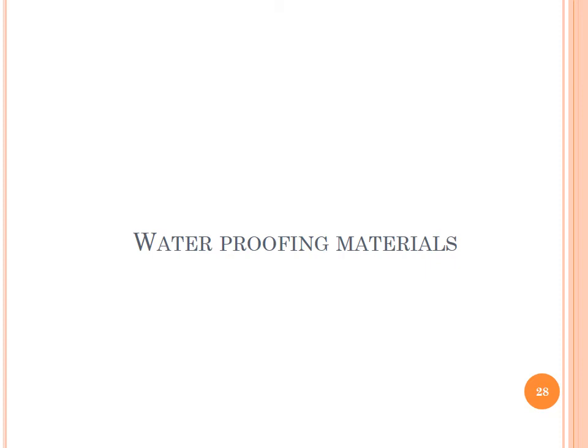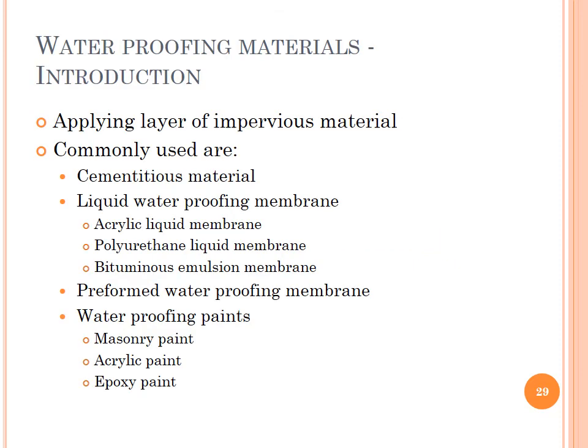Next, we are going to discuss about waterproofing materials. Waterproofing means applying a layer of impervious material. The commonly used materials include cementitious material, liquid waterproofing membrane such as acrylic liquid membrane, polyurethane liquid membrane, bituminous emulsion membrane, preformed waterproofing membrane, and waterproofing paints like masonry paint, acrylic paint and epoxy paint.